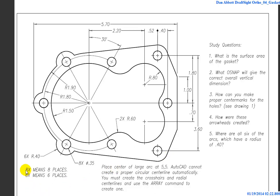A couple of things about reading this print: when you see something that says 8x, it means there are eight places where that feature appears. 6x means six places — there's a radius of 0.4, and counting them gives us six locations. There are two places with a radius of 0.6, and two places with a radius of 0.8 as well. On a symmetrical part like this, if you see one dimension on one side, you can assume it's the same on the other side.